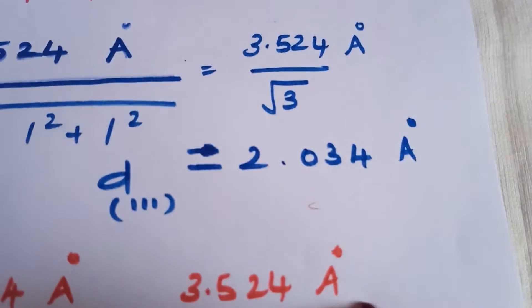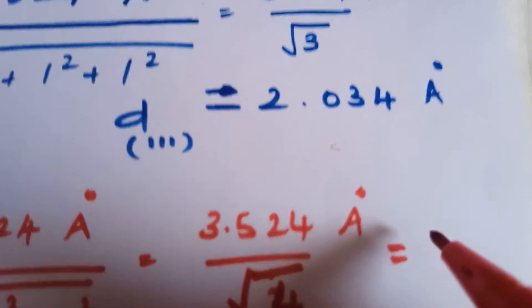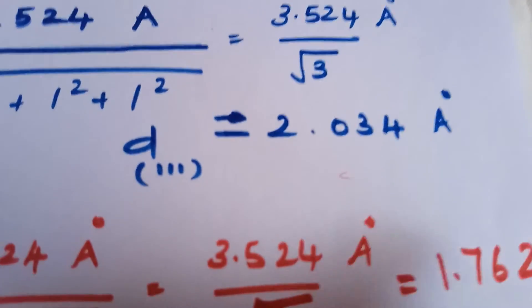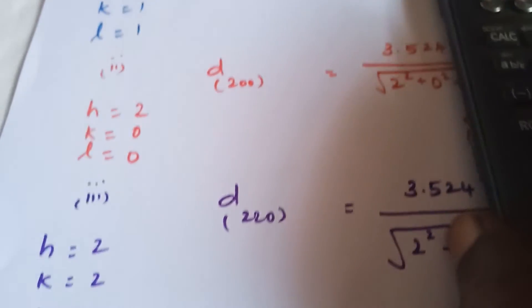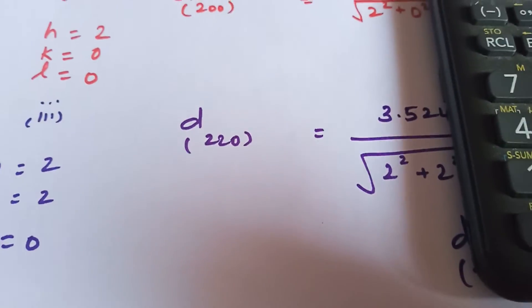Now, for the third value, d220, the hkl values are given as 2, 2 and l is taken as 0.